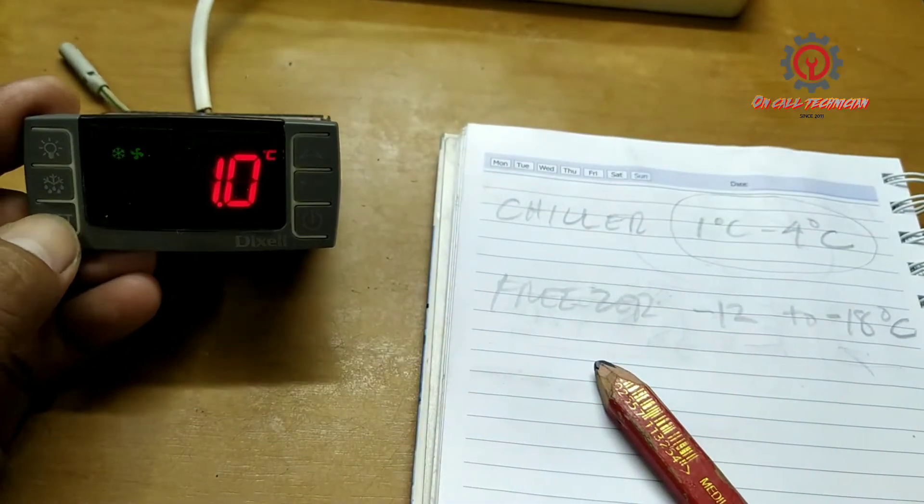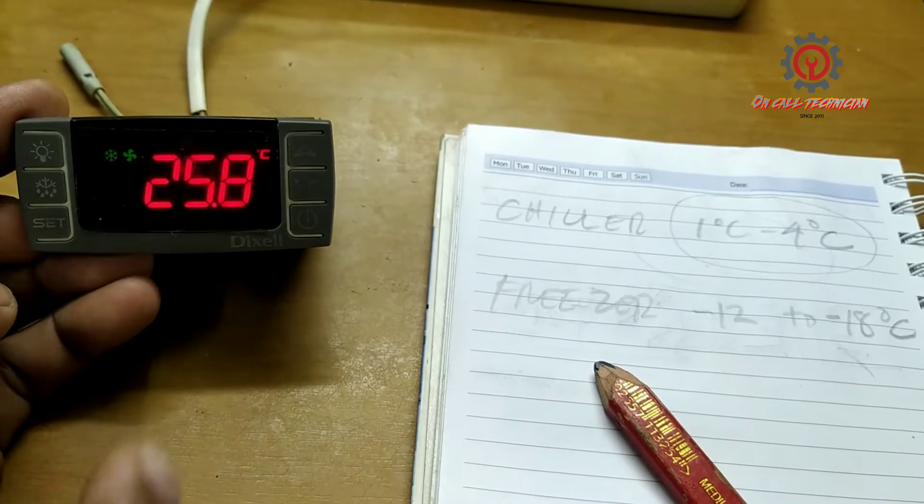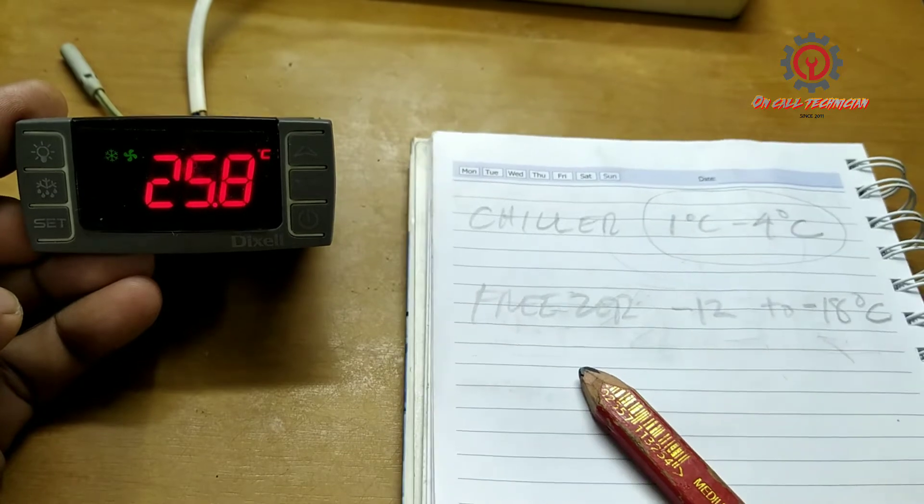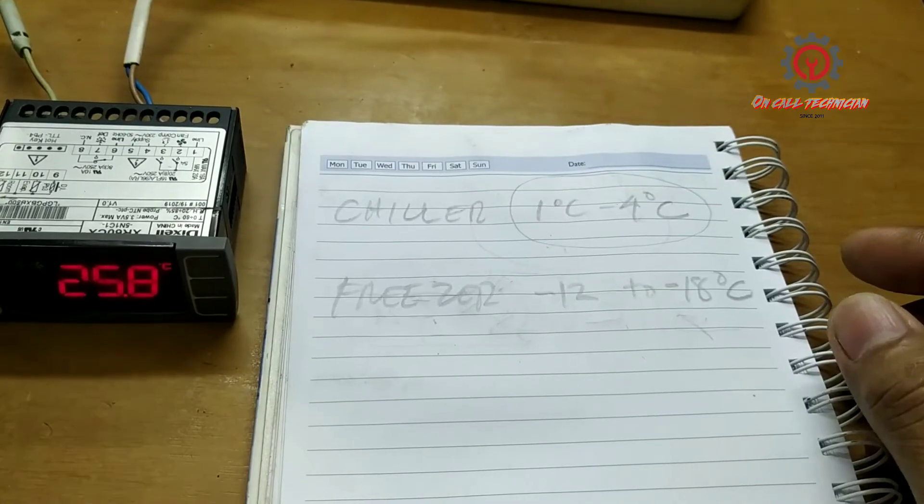Press set to memorize and you're all done. You already changed the freezer setting to chiller setting.